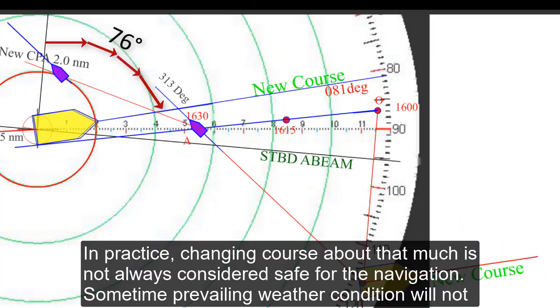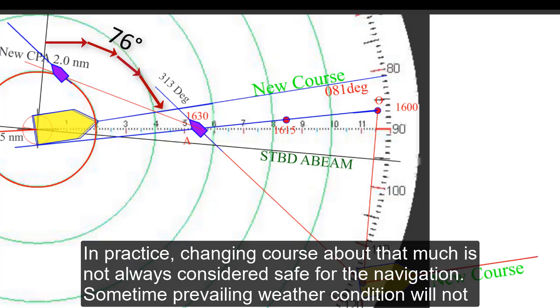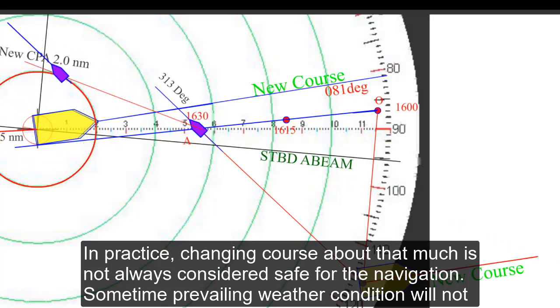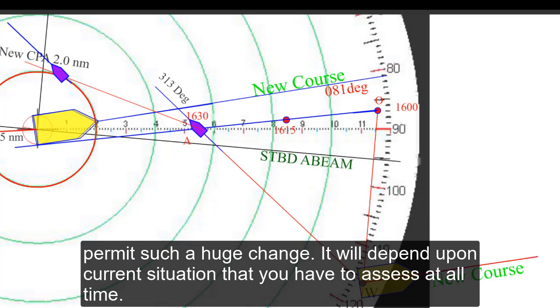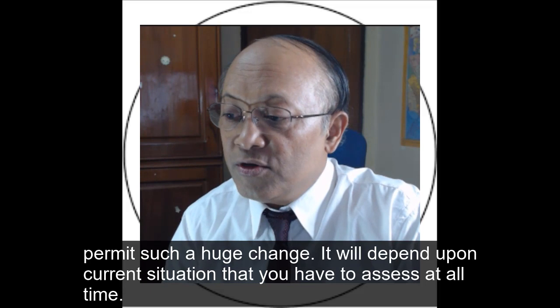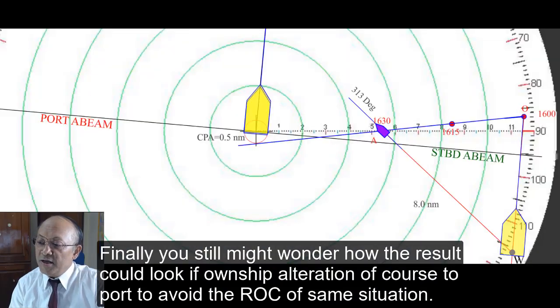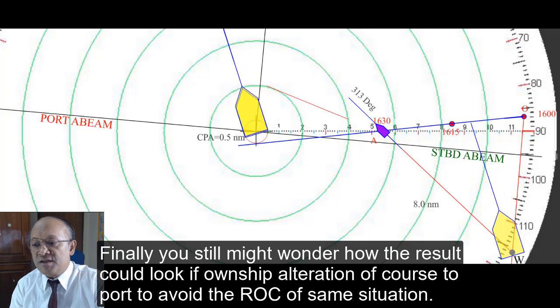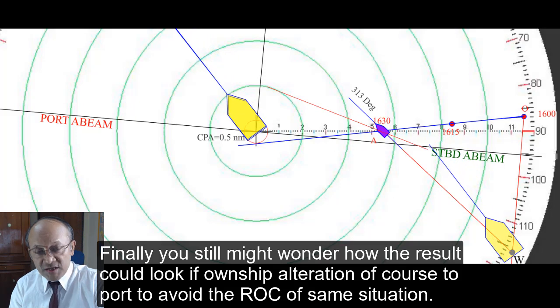In practice changing course about that much is not always considered safe for the navigation. Sometimes prevailing weather conditions were not permitted such huge changes of course alteration. It will depend on current situation that you have to assess at all time. Finally you still might wonder how the results could look if the own ship alterations of course to port to avoid the risk of collision in the same situation.